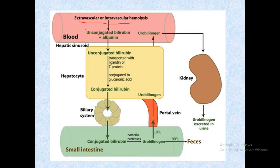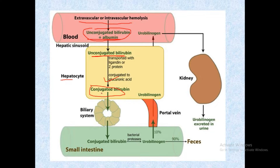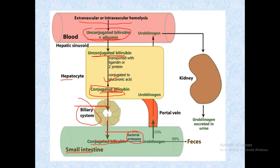Unconjugated bilirubin enters the liver hepatocytes, where it is conjugated with glucuronic acid and converted to conjugated bilirubin. This conjugated bilirubin then enters the biliary system and passes into the small intestine. In the small intestine, gut bacteria with bacterial enzymes convert conjugated bilirubin to urobilinogen by removing glucuronic acid.